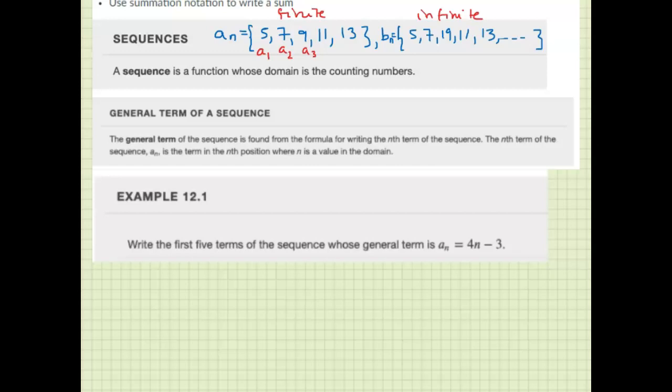The letter a is the name of the sequence, and the subscript tells you which term you're talking about. The general term of a sequence is found from the formula for writing the nth term of the sequence.